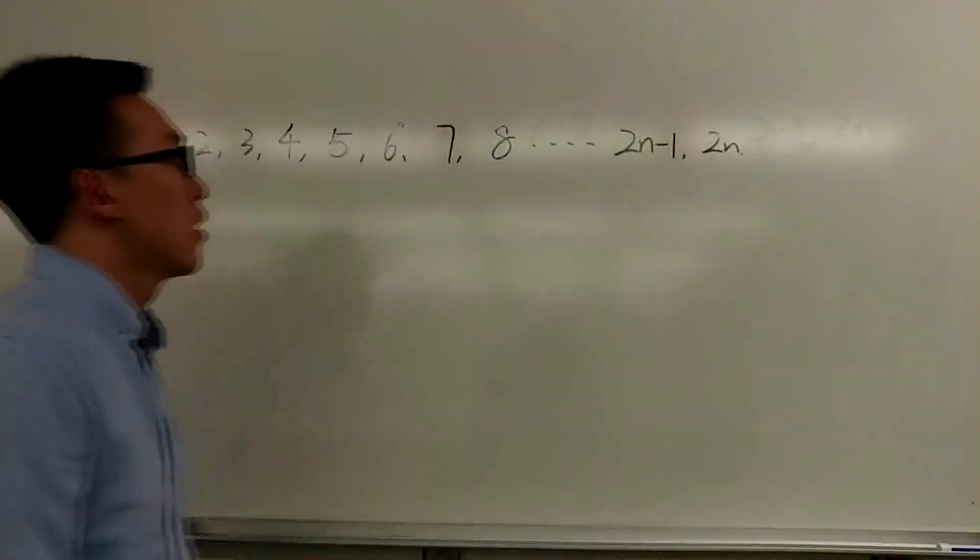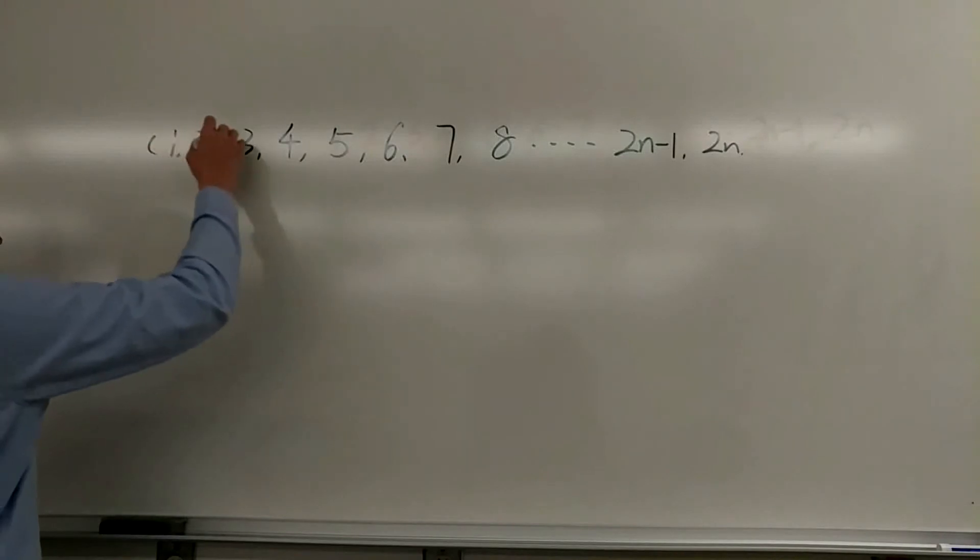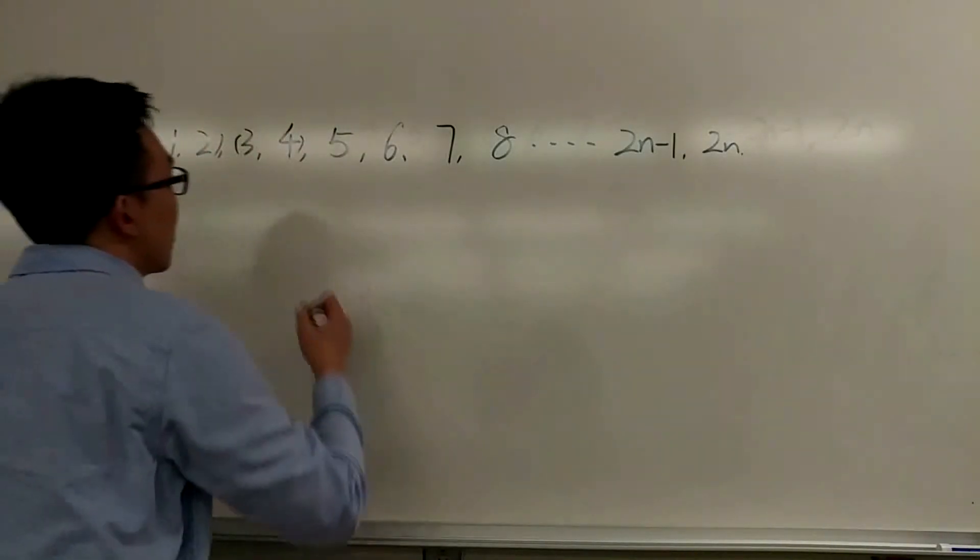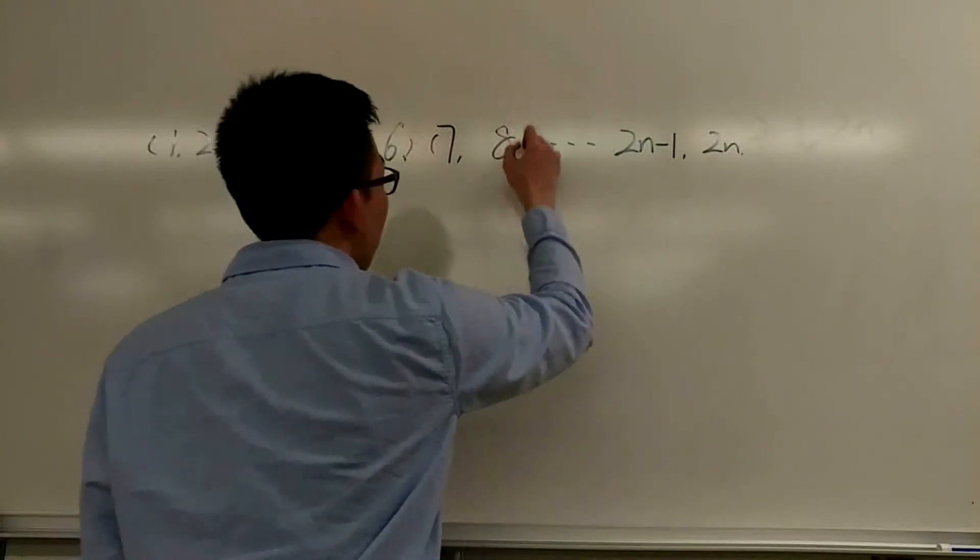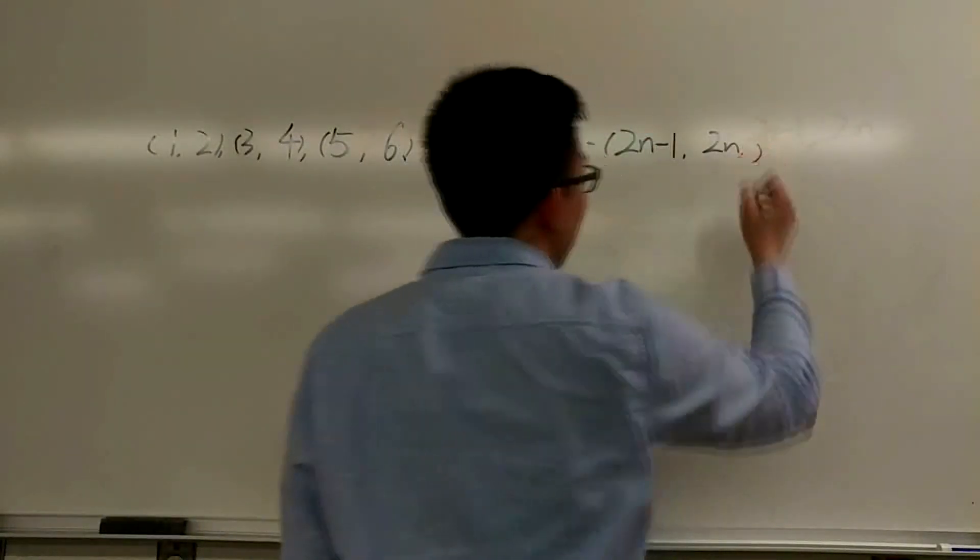Then, consider there are N pairs of integers: one, two; three, four; five, six; seven, eight; dot dot dot; two N minus one, and two N.